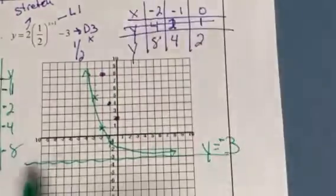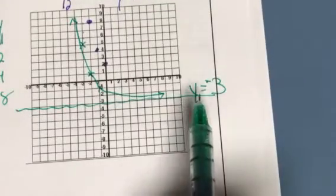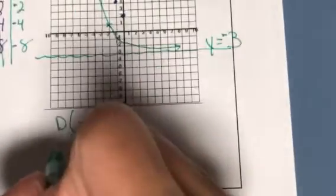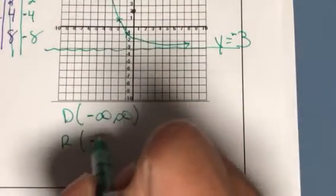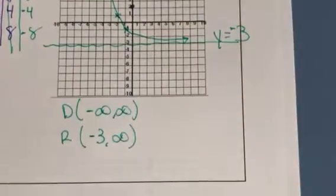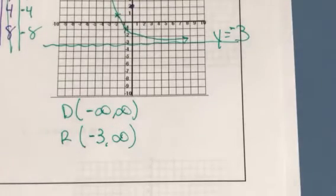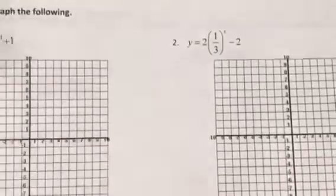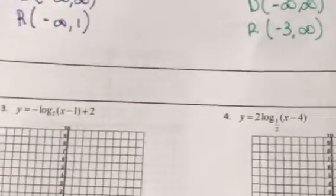The wall is at y = -3, which affects range. Domain is negative infinity to infinity. The range goes up from the wall: from -3 to infinity. Now you can try the log problems — maybe pause and do exponential problems 1 and 2 on the back first while it's fresh, then come back for logs.